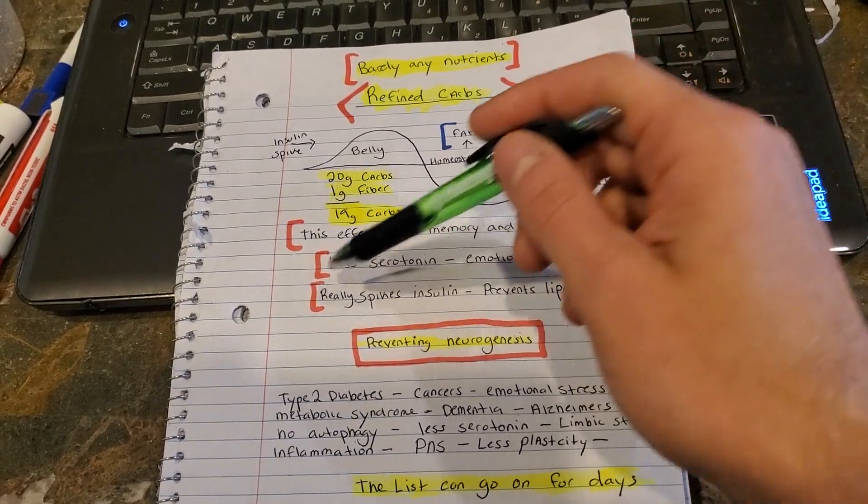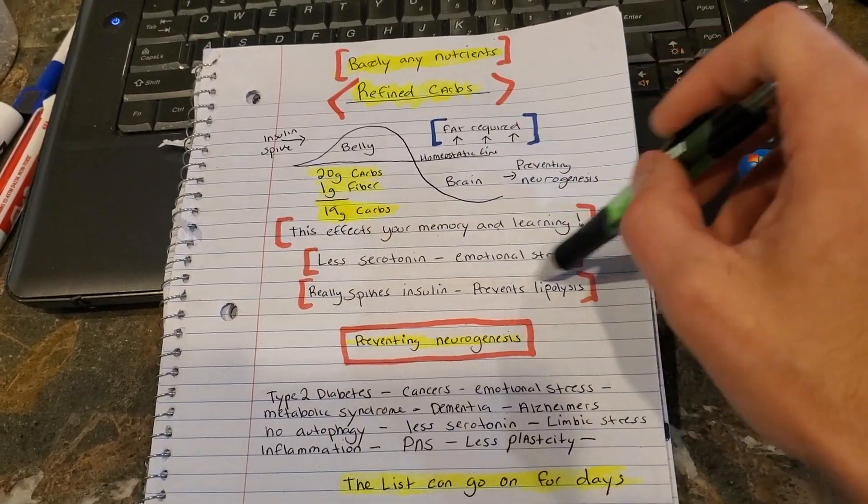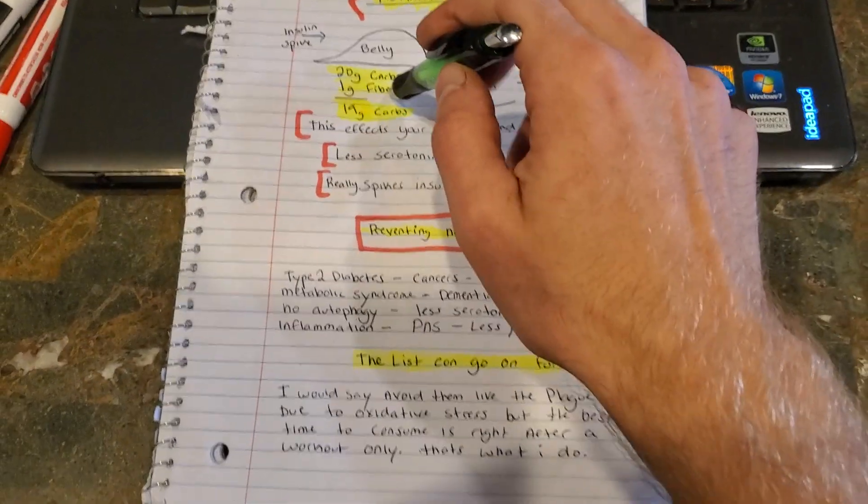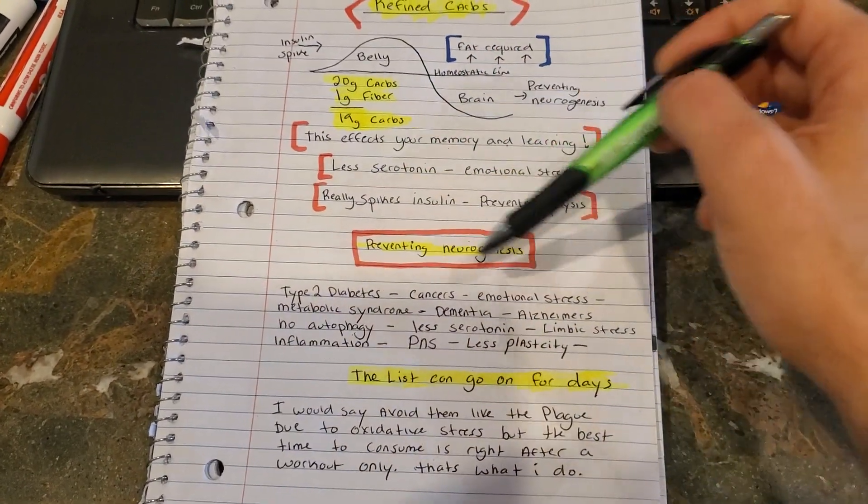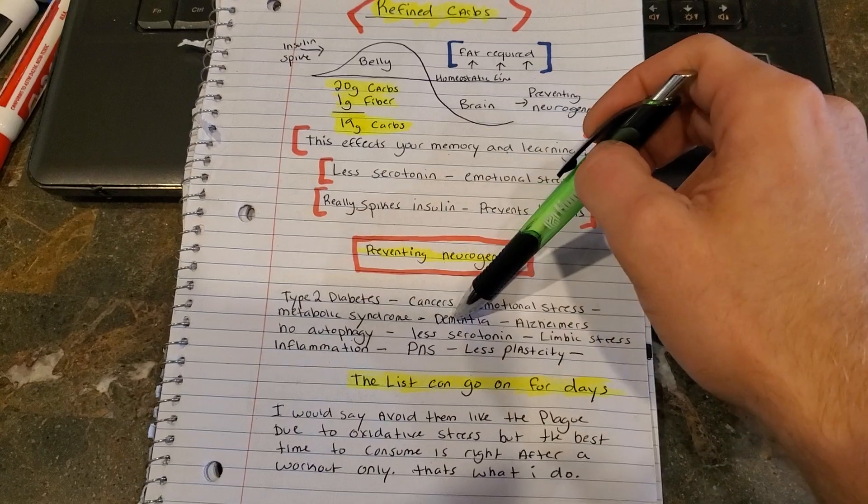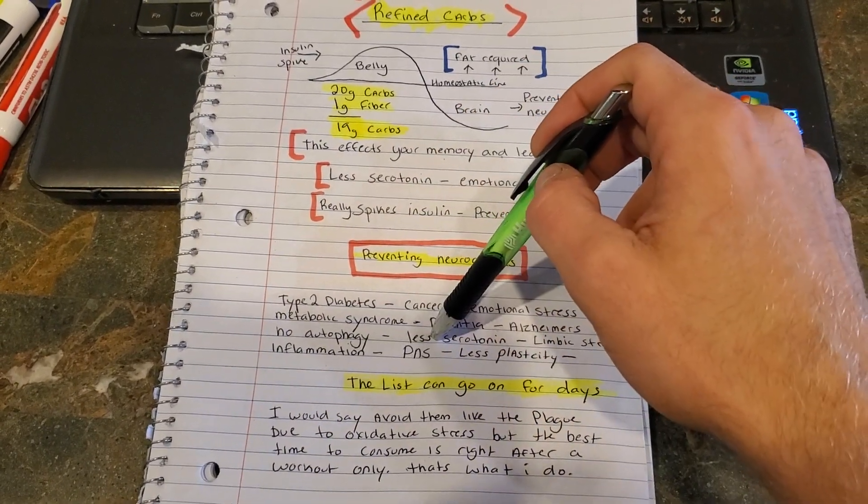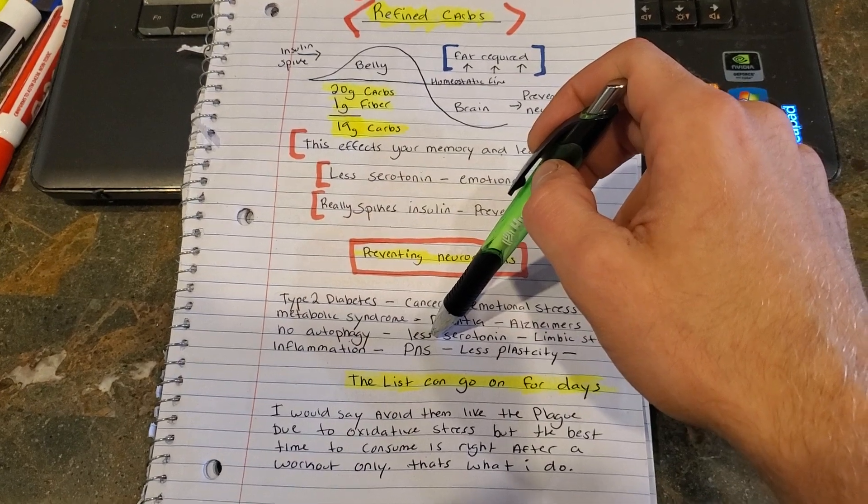So same thing here. Refined carbs, no fiber, 19 grams of carbs, insulin spike. It's going to grow your belly. That's your inflammatory fats. You're going to go below your homeostatic line because you went above it with your belly. You're going to go below it with your brain, preventing neurogenesis. This is going to affect your memory and learning. Less serotonin production, emotional stress. It really spikes your insulin and prevents lipolysis.